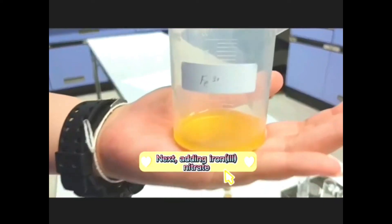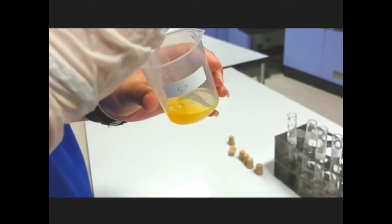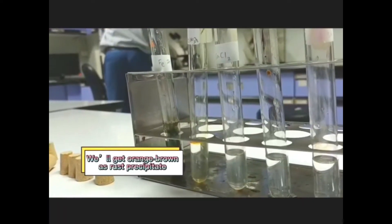Next, adding iron(III) nitrate to the second test tube. We will get an orange-brown precipitate.